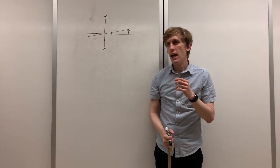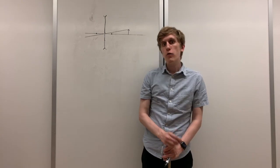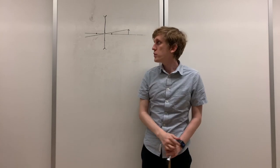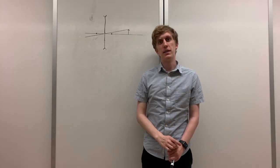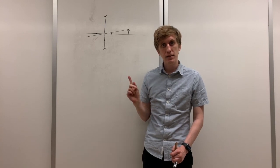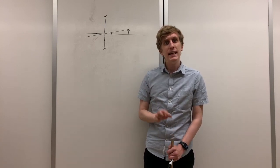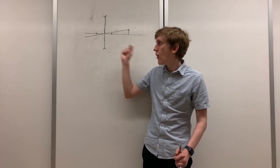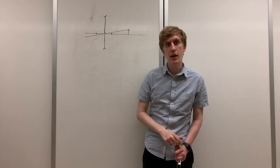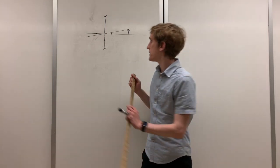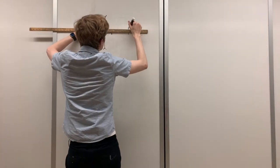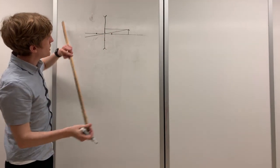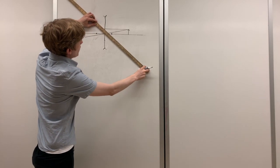Next, let's draw the line that travels horizontally from the object. For the converging lens, that line was refracted through the focal point on the opposite side of the lens. However, that can't happen in this case because the lens is diverging. Instead, that light ray will be refracted as though it was coming from the focal point on the same side of the lens as the object.